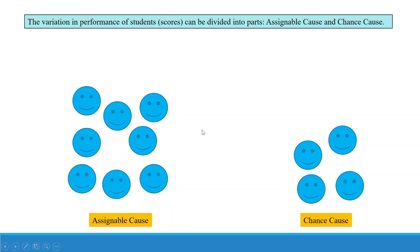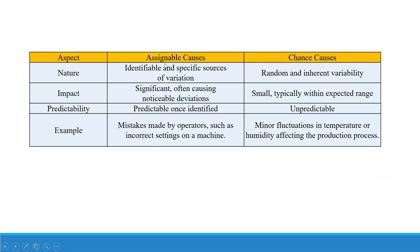Now there can be two types of variations. The first one is because of the assignable cause and the second one is because of the chance cause. The variation in the performance of students' scores can be divided into these two parts. Assignable causes are identifiable and specific sources of variations that are known.